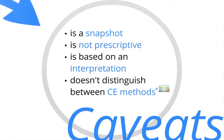It should be noted that the argument map is but a snapshot of an evolving and ongoing controversy. Moreover, the map is not prescriptive. It doesn't try to resolve the controversy. It doesn't tell you what you ought to believe about the key questions of the debate.